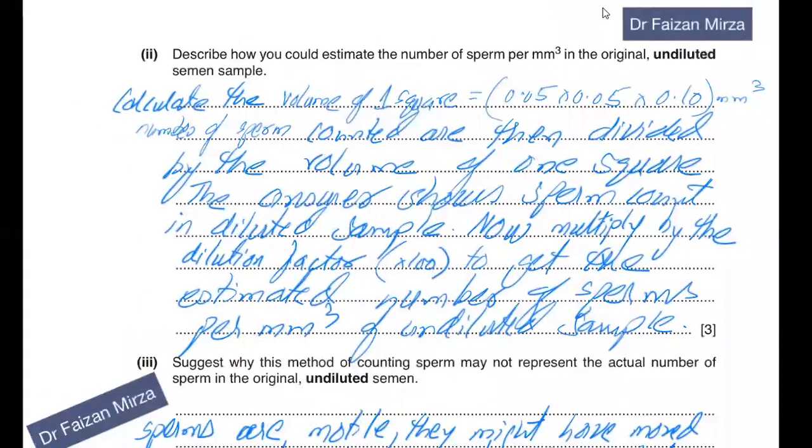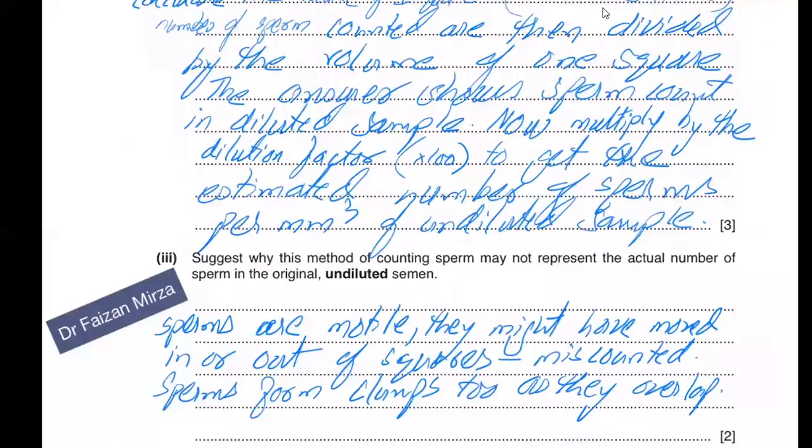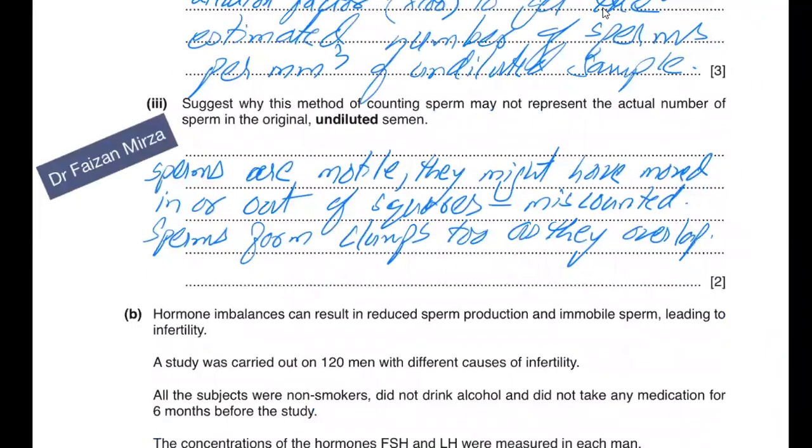Describe how you could estimate the number of sperm per millimeter cube in the original undiluted semen sample. You calculate the volume of one square by multiplying its three dimensions together. The answer tells you the volume that square can hold. The number of sperm counted are divided by the total volume of that one square. For example, if I had four sperm, I'll divide by the total volume. My answer shows the sperm count in the diluted sample. Since the sample was diluted 100 times, I'll multiply the answer by 100 to get the estimated number in the undiluted sample.